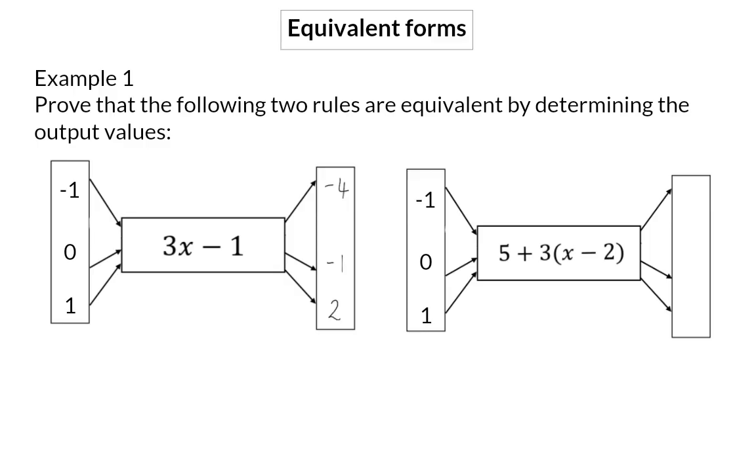The substitution into the second rule requires a bit more simplification. When you substitute in minus 1, you first have to simplify inside this bracket to minus 3, then multiply the plus 3 in to get minus 9, and now you will have a final answer of minus 4, which is the same as for the first rule. If I substitute in 0, I will have a minus 2 inside that needs to be multiplied by 3 to get minus 6, and if I add 1, I end with minus 1.